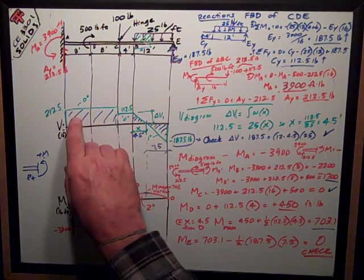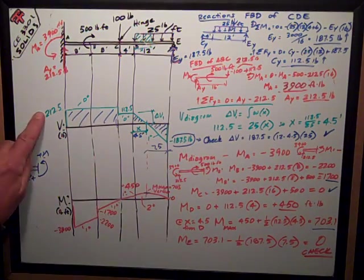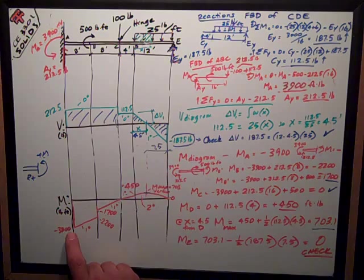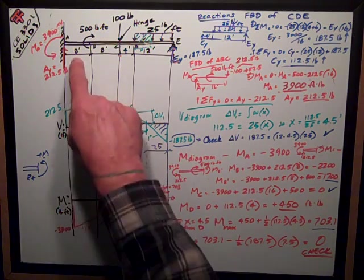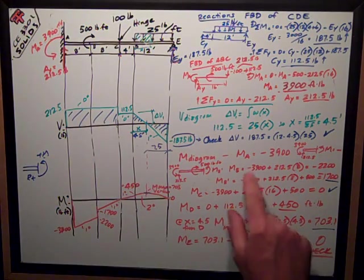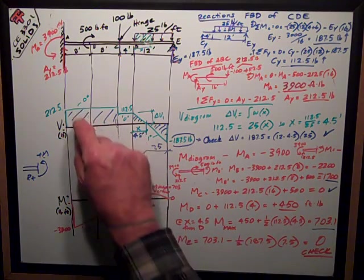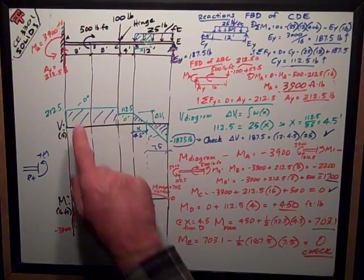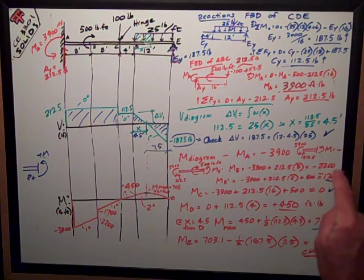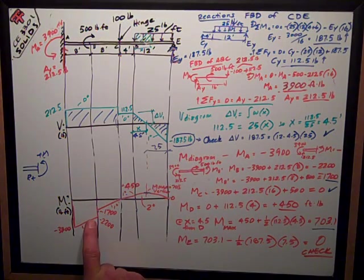Slope of the moment diagram is the value of the shear diagram. So it's a constant slope of 212.5 foot pounds per foot. So in 8 feet, my moment at point B just to the left of that 500 foot pound couple is going to be negative 3900 my starting point, plus because it's a positive shear the area under the shear diagram, 212.5 times 8 feet, works out to be negative 2200 foot pounds.